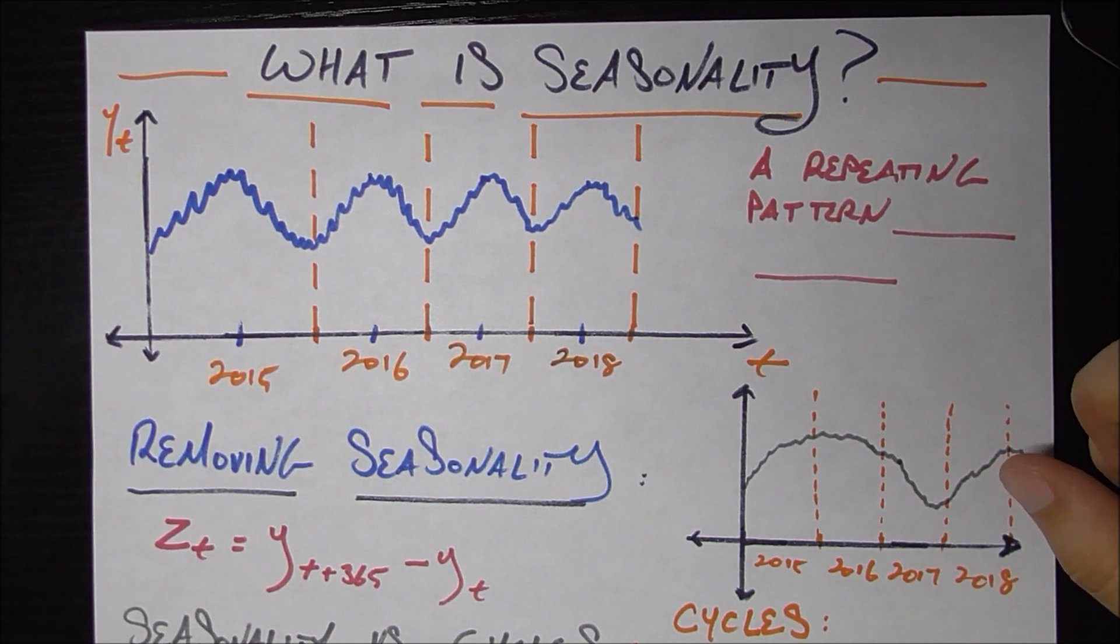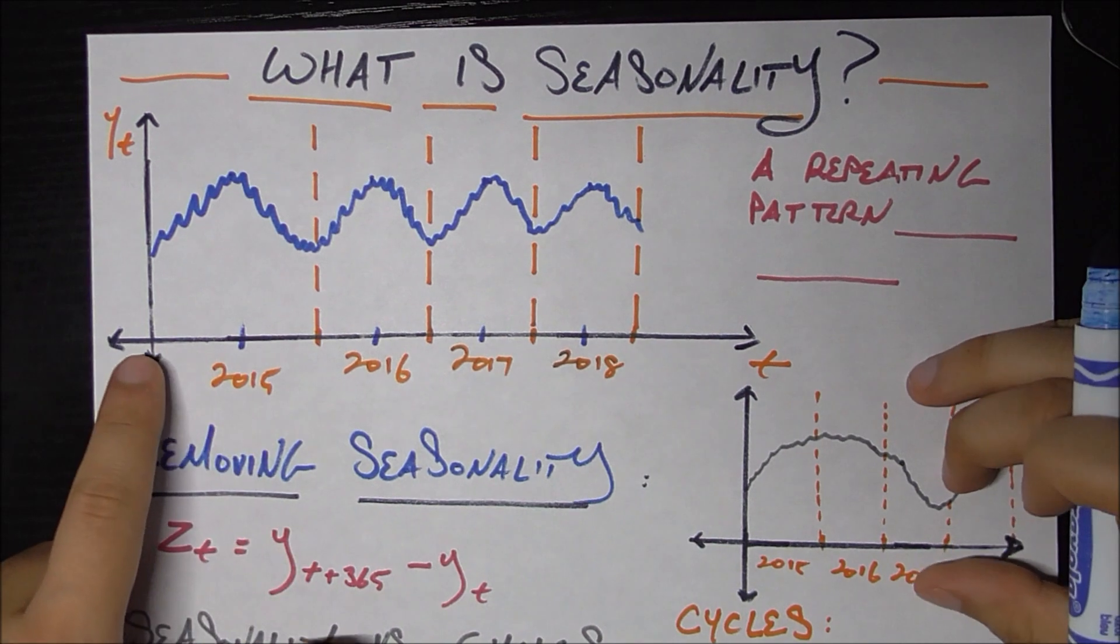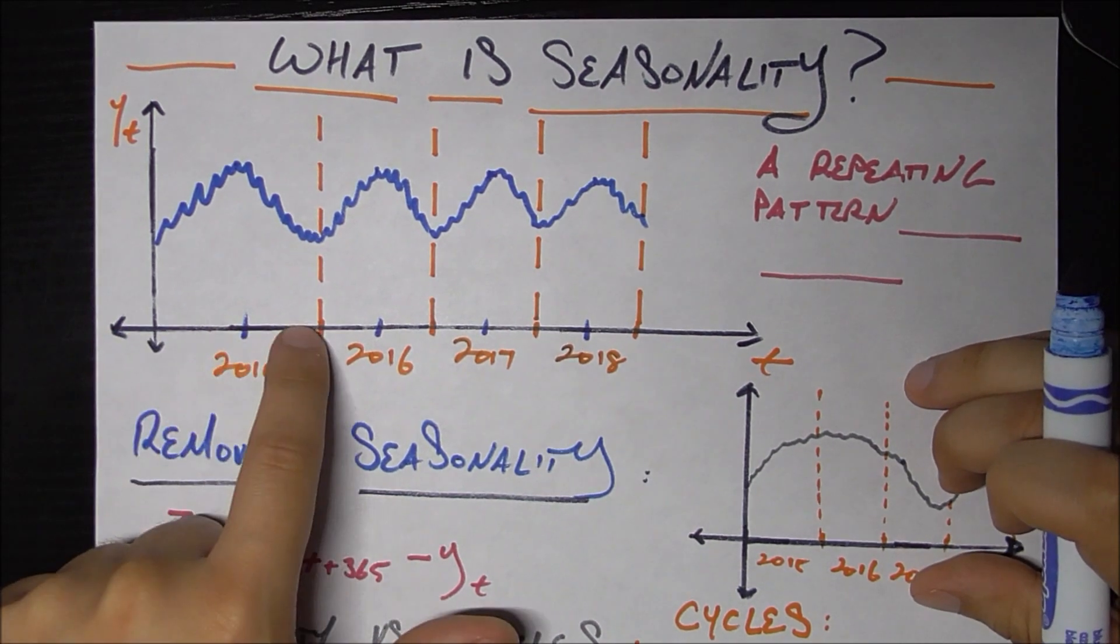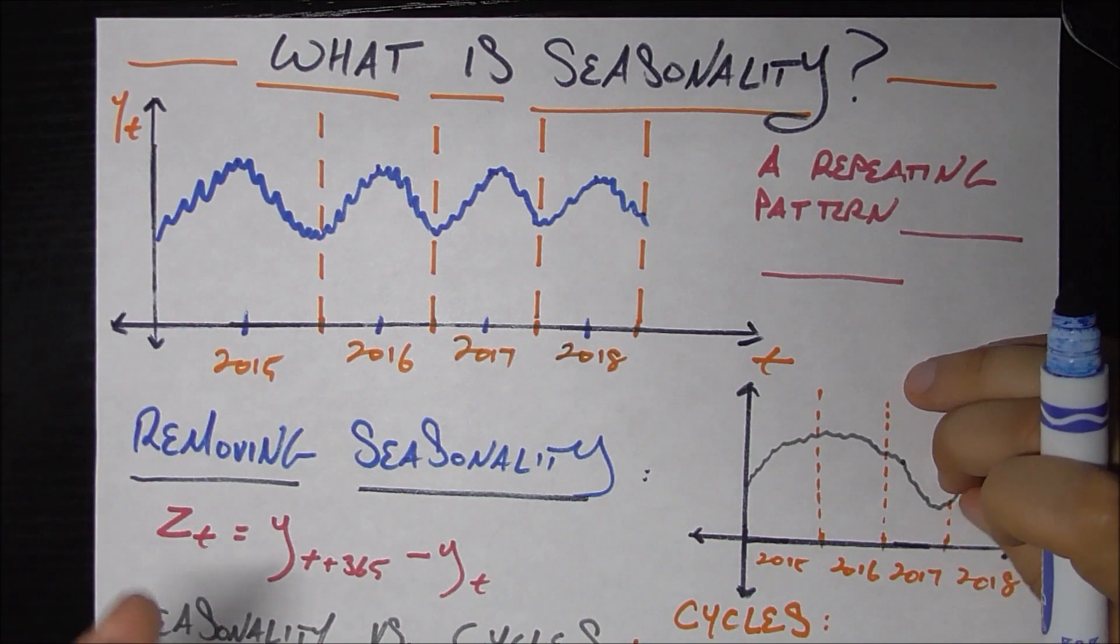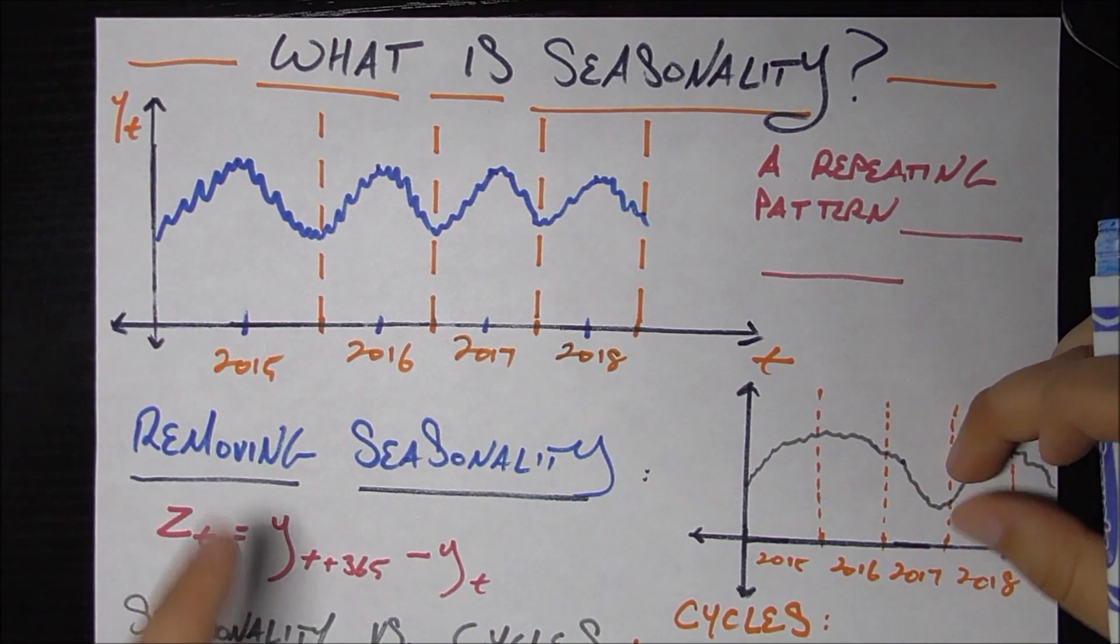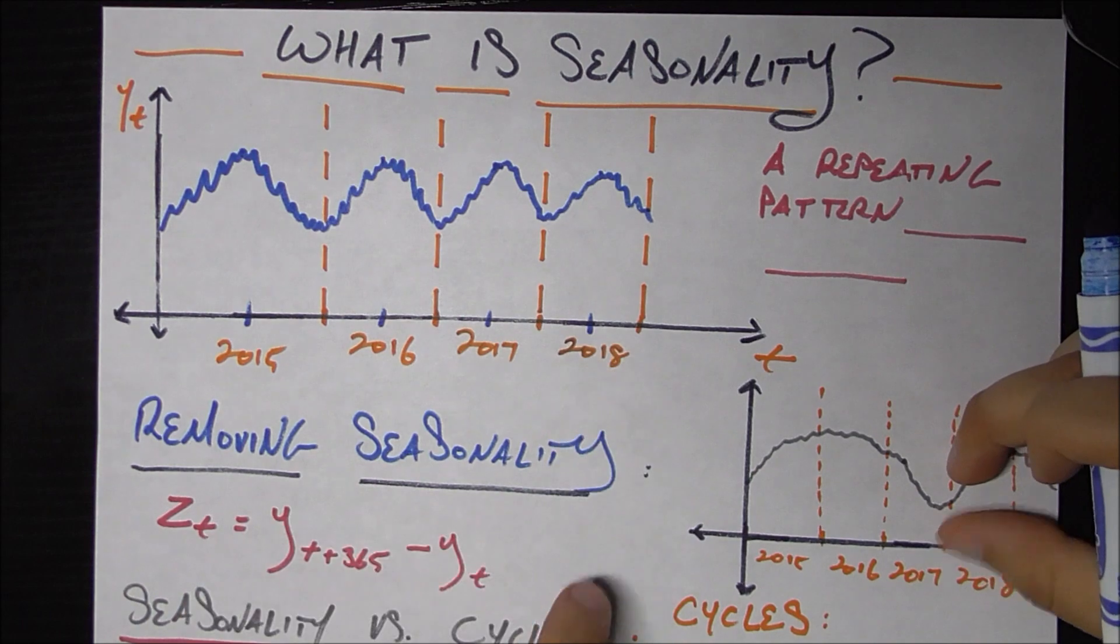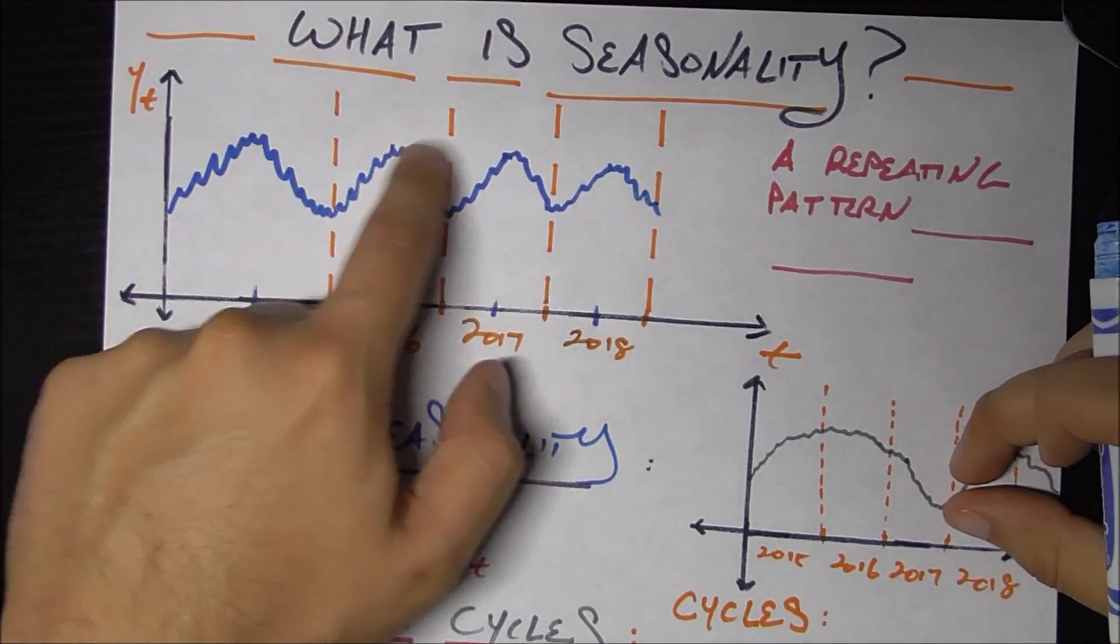So the setup is that you're an ice cream vendor and you track your ice cream sales over time. So here's 2015, 16, 17, 18. And why is your sales of ice cream? Of course, as we would expect in the middle of each year, so around the summer when it's really hot, everybody wants your ice cream.